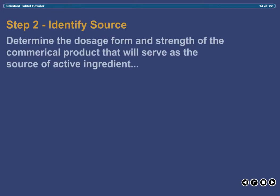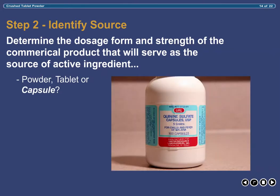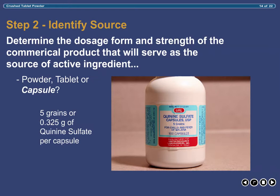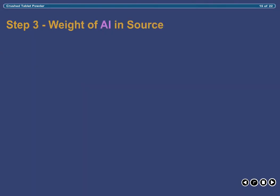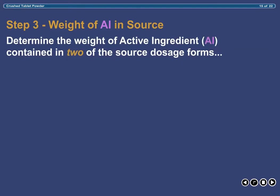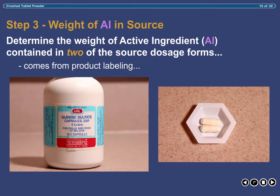Next, we must identify the source of quinine sulfate that will be used. In this example, the source will come from commercially prepared five-grain quinine sulfate capsules containing 325mg or 0.325g of quinine sulfate per capsule. Once the source of active ingredient has been identified, determine the amount of active ingredient contained in the contents of two source capsules — this comes directly from the product labeling. In this example, the contents of two five-grain quinine sulfate capsules obviously contain 650mg or 0.65g of quinine sulfate.